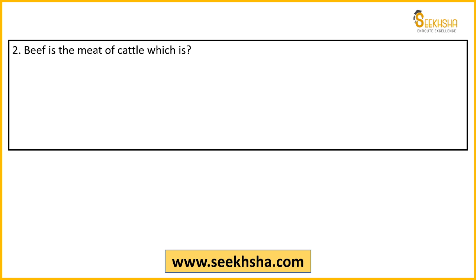Second question: Beef is the meat of cattle — you have heard this word a lot. Cattle has different types of meat. As we saw in the last class, veal was 3 to 4 weeks after birth, and Calus was 3 to 8 months. Beef is the meat of cattle — but how many years of age?